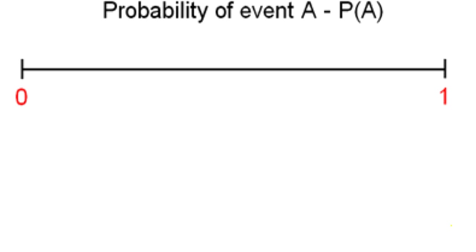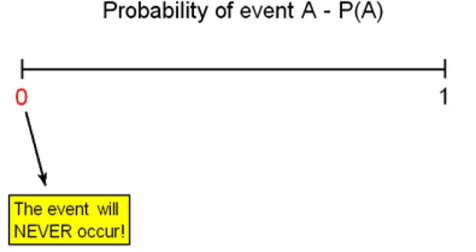The probability of any event ranges from 0 to 1. Let's start with the extremes, 0 and 1. A probability of 0 means that the event has 0 chance of happening. It will never occur.